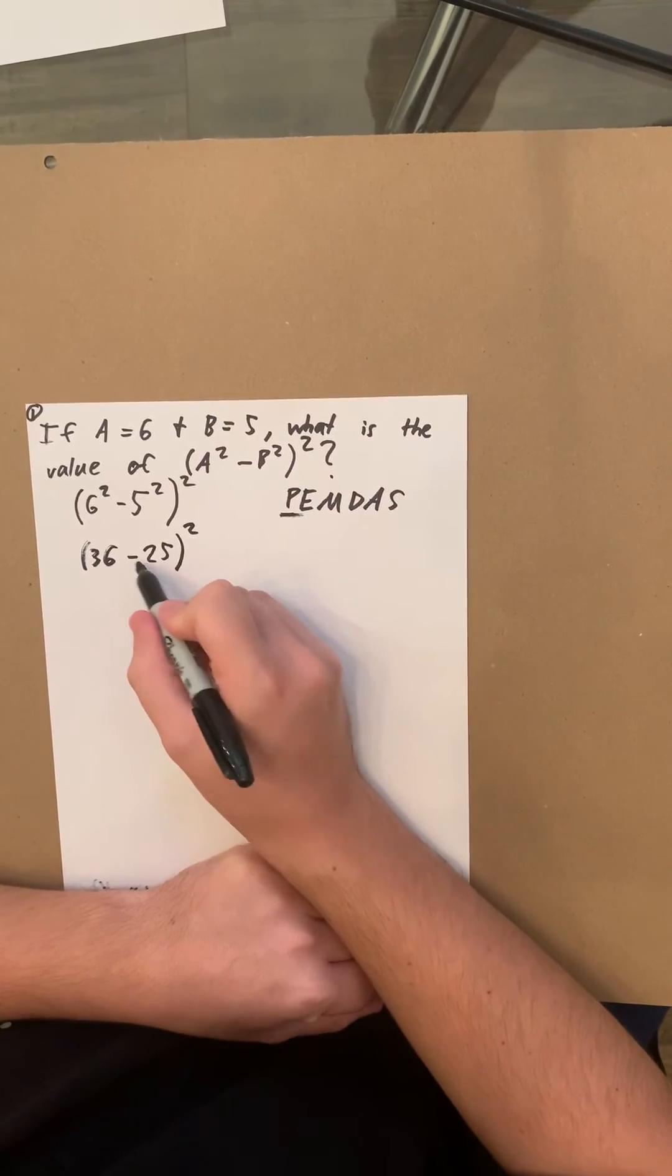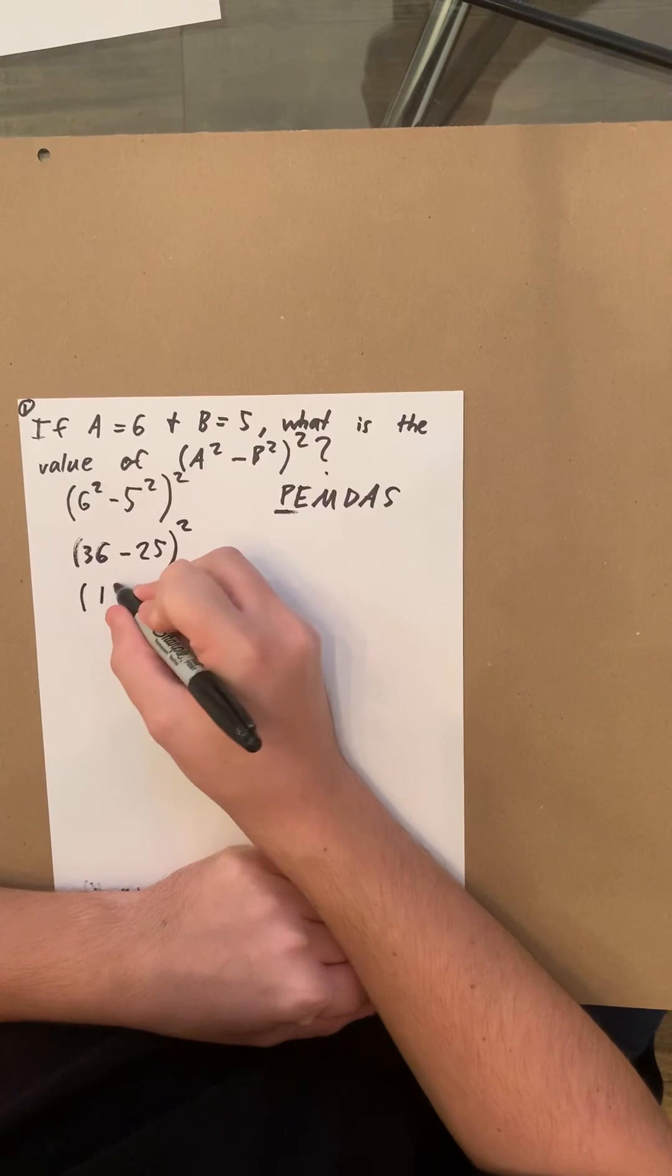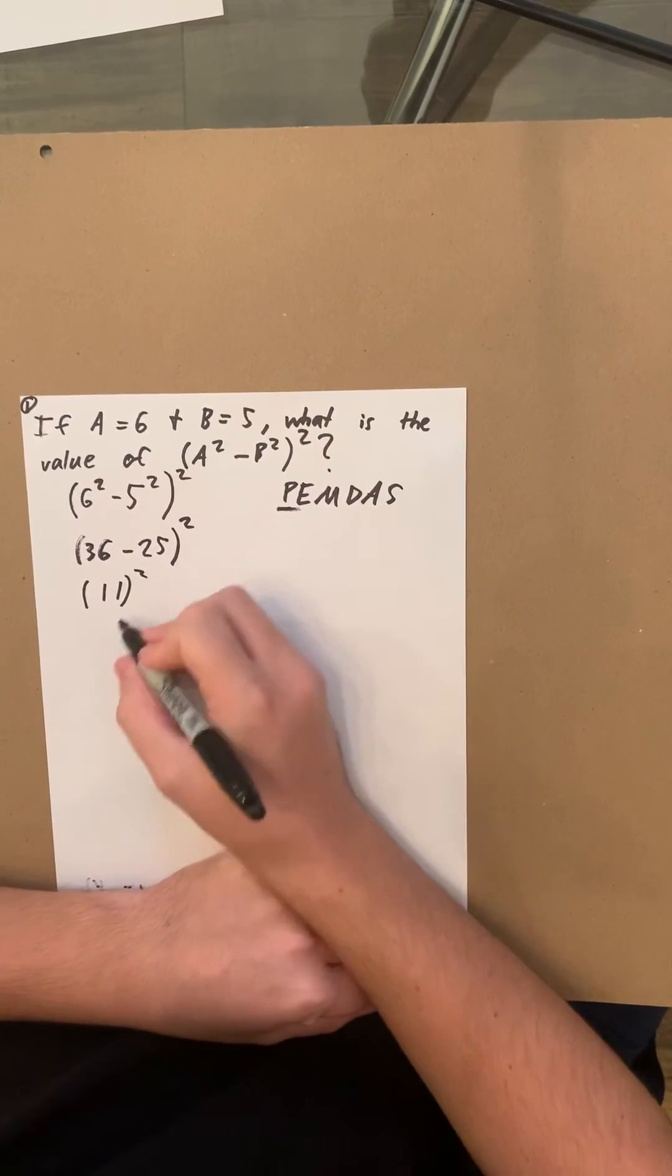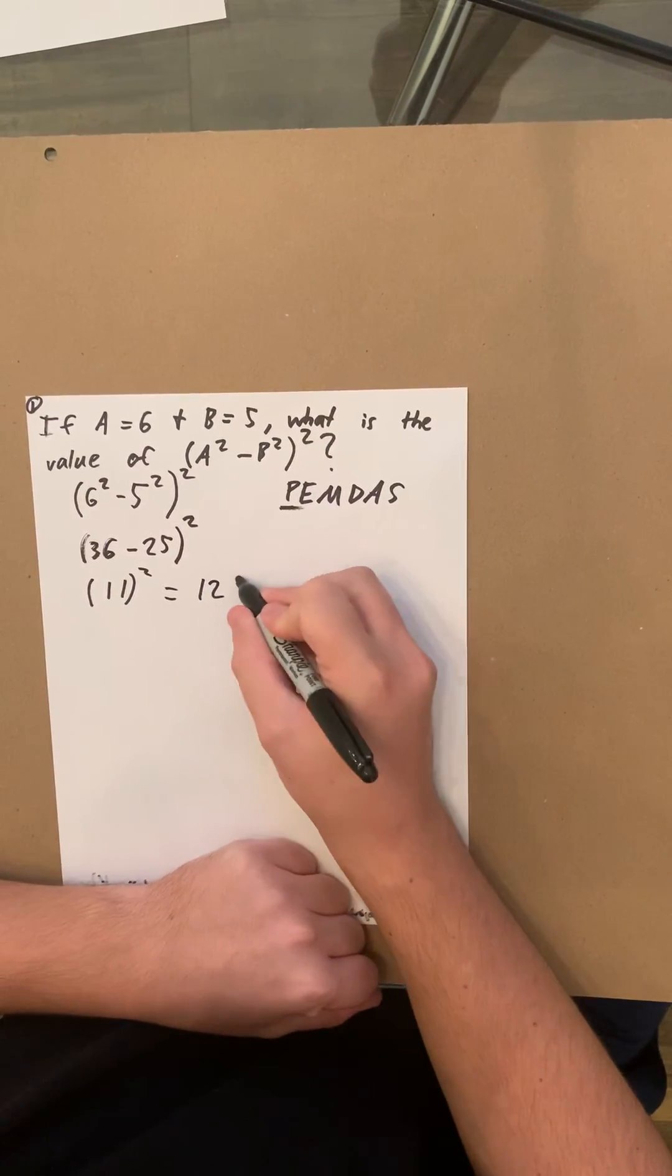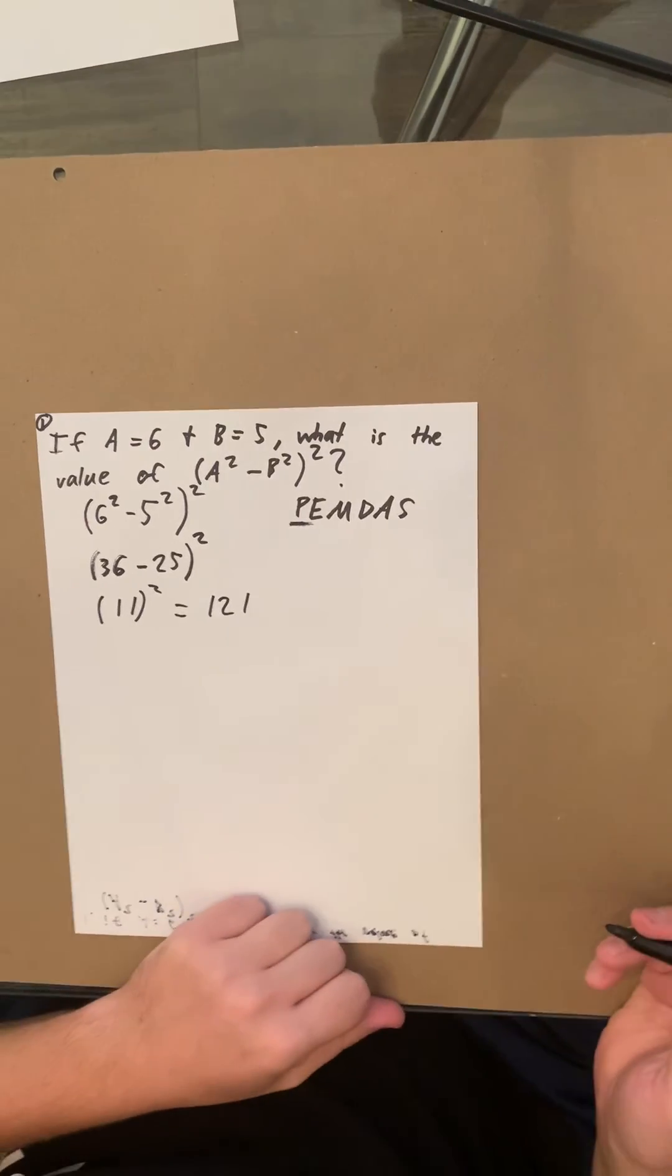So, 36 minus 25 equals 11 squared, and 11 squared equals 121. And that's the answer to number one.